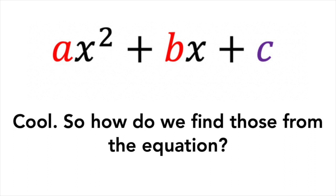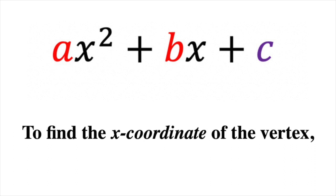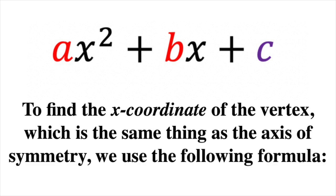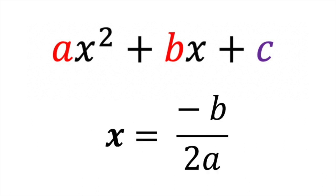So how do we find those from just the equation? Well, there's a formula. To find the x-coordinate of the vertex — which is the same thing as the axis of symmetry — we use the following formula: x equals negative b over 2a. That's often called the vertex formula, and it's going to give you the x-coordinate of the vertex, which is the same thing as the axis of symmetry.